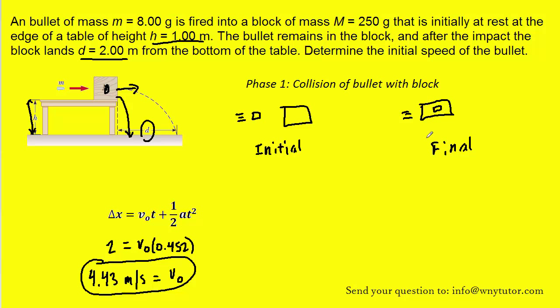And then the two objects begin to move together. The key is to recognize that the initial velocity that we had found when the block and bullet were sliding off the table becomes the final velocity of phase one. I want to say that again because that's really important. The initial velocity that we calculated when the block and the bullet slid off of the table is actually going to be the final velocity in the collision phase of this problem. So basically, we know that right here, the final velocity of the bullet and block system is 4.43 meters per second.